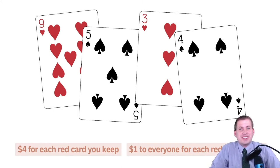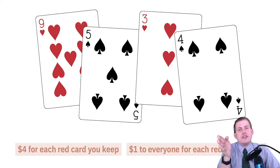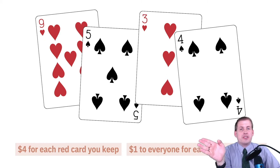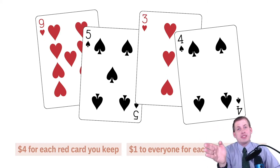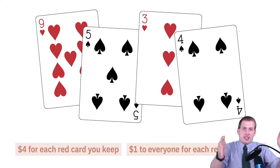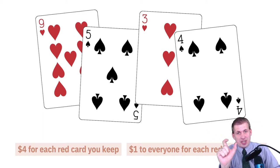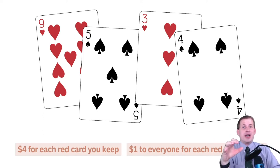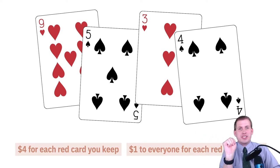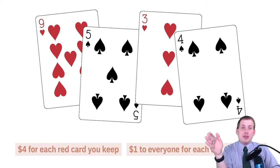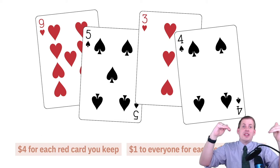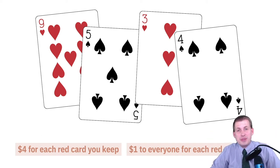For the first five rounds, nobody's allowed to talk or coordinate. Then after round five, I give the whole class a minute to coordinate and figure out a plan. Students generally say 'everybody, we need to keep giving to the middle,' and everybody nods. That next round is high — lots of people give to the middle — but then it devolves immediately after because there's no way to punish people for not giving. Then you coordinate again, it goes back up, and starts decreasing again.